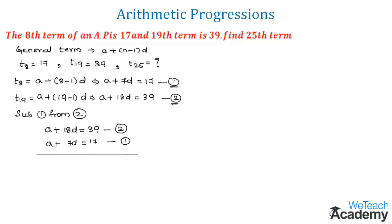On subtracting, the signs of equation 1 get changed. We can cancel plus a and minus a. Then we get 18 minus 7 as 11d. Coming to the right-hand side, if we subtract 17 from 39, we get 22.